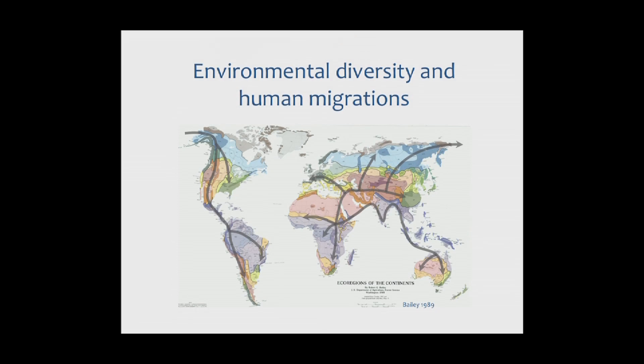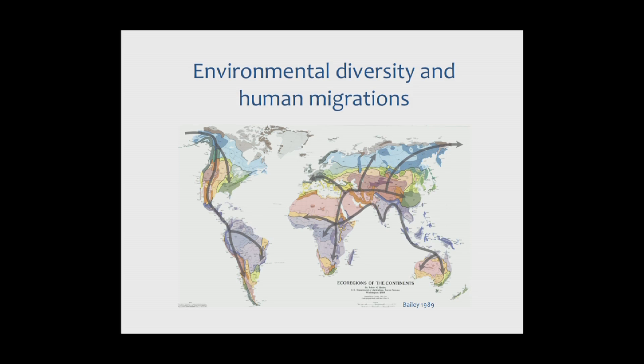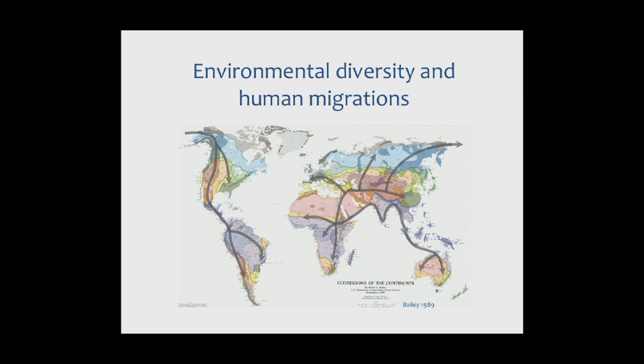As we've heard from a number of talks today, we know that humans originated somewhere in sub-Saharan Africa, and from there they expanded to occupy essentially every corner of the Earth's landmass, encountering a tremendous diversity of habitats and environments. Environments that differ in terms of climate, nutrient availability, resource availability, and degree of solar radiation, as illustrated in this map of the ecoregions of the continents. These different aspects of human environments have exerted strong selective pressures on human metabolic and physiological processes, and adaptations have arisen in response.